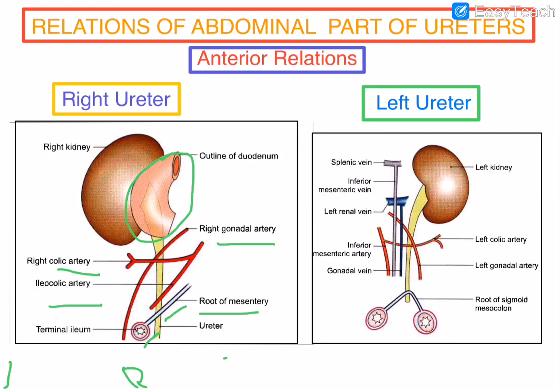On the left side, the ureter is related to the peritoneum anteriorly, and some branches of the aorta are also crossing on the anterior aspect — one is the left gonadal artery, the left colic artery, and then the sigmoid colon and the root of the sigmoid mesocolon are also related on the left ureter anteriorly.